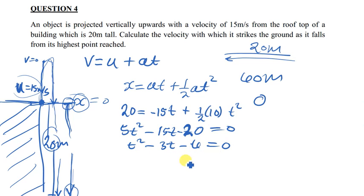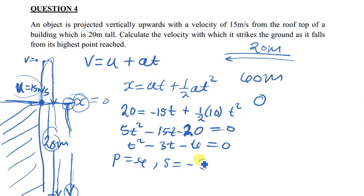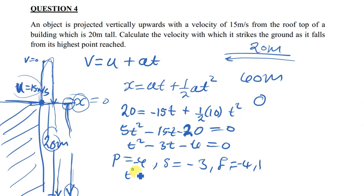This quadratic equation has a product of negative 4 and a sum of negative 3. We can find the factors — two numbers that add to give negative 3 and multiply to give negative 4. These two numbers are simply negative 4 and 1. So we replace them: t² + t - 4t - 4 = 0.